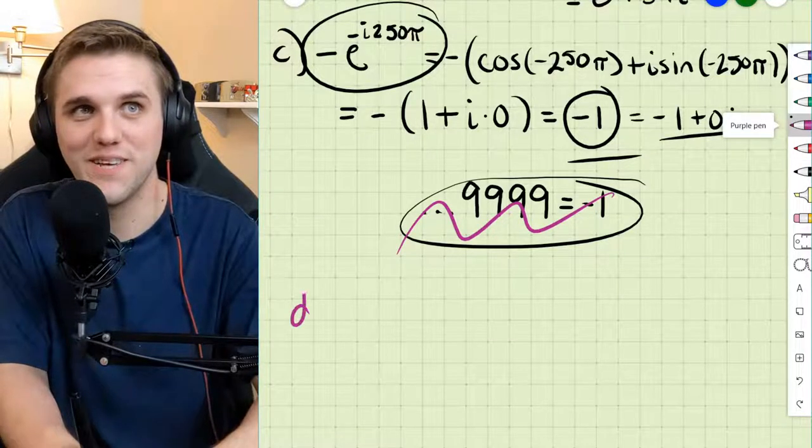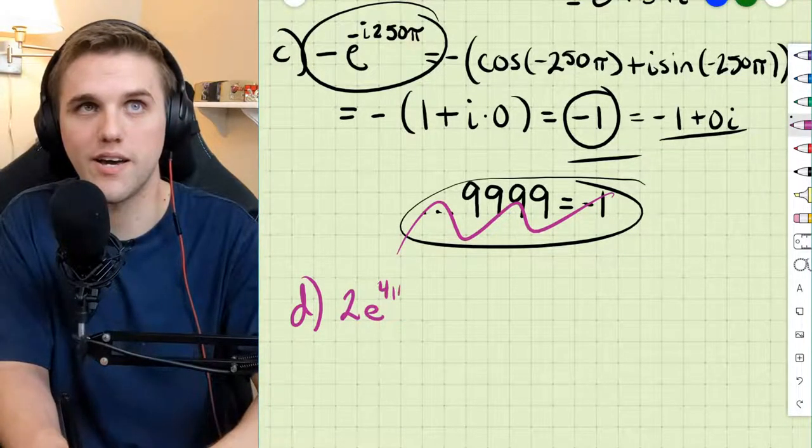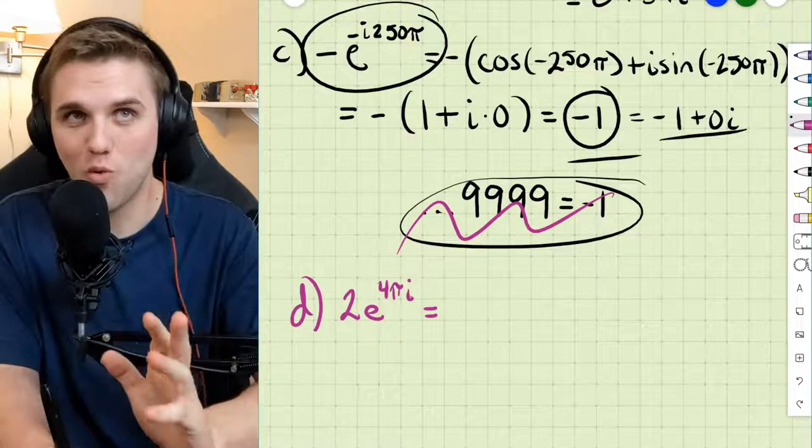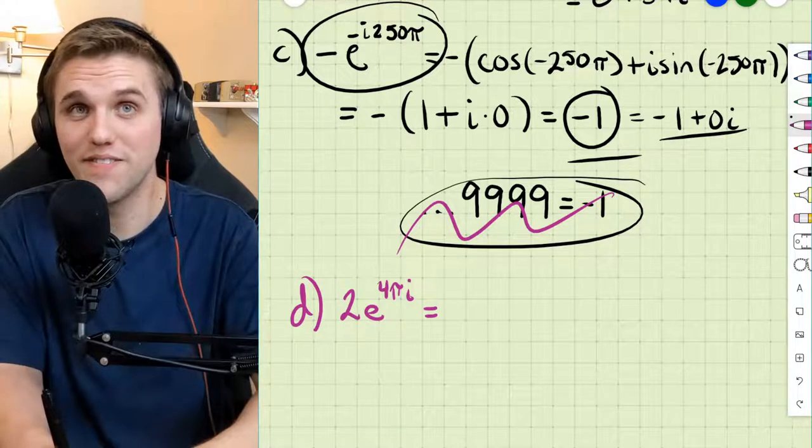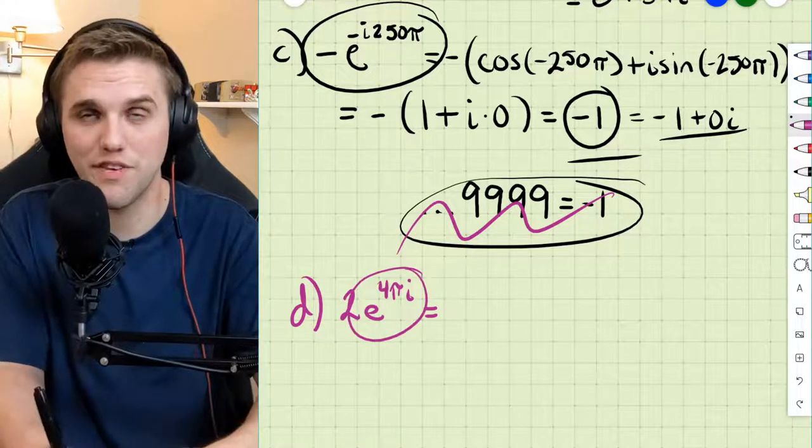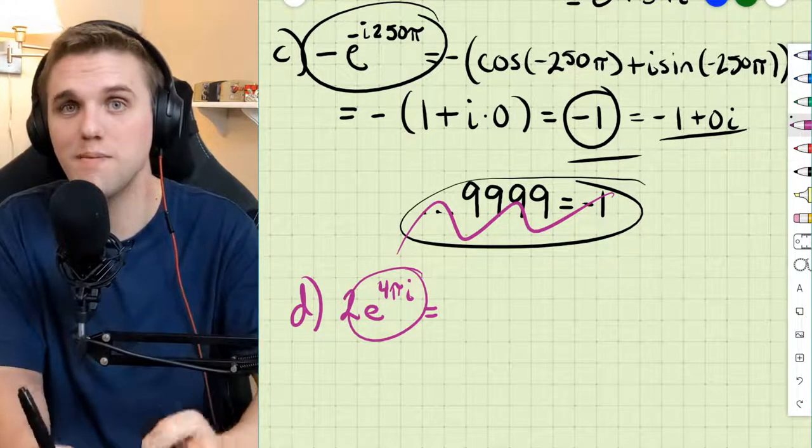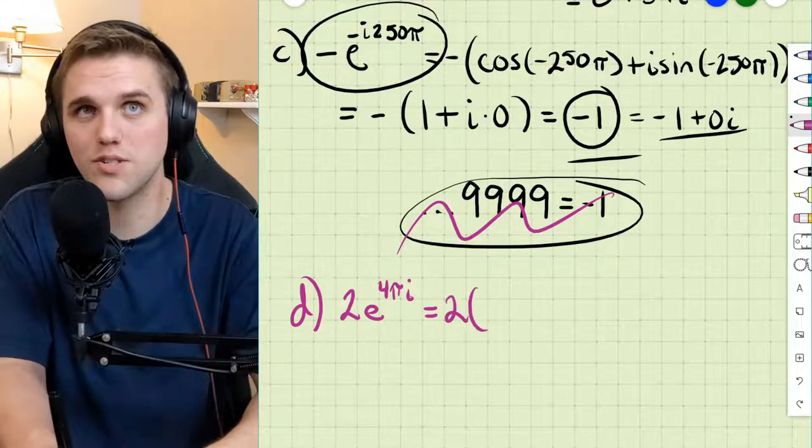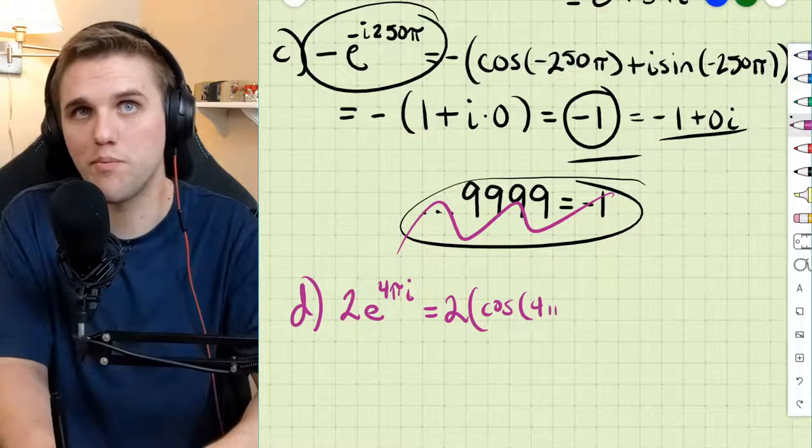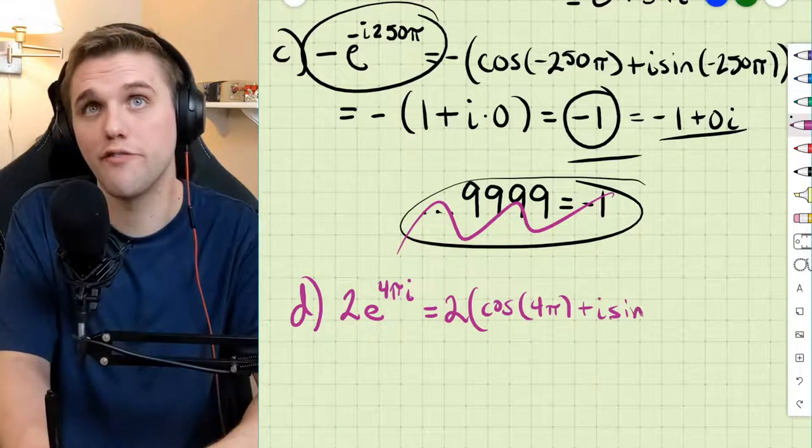All right, let's move on to part D. This is 2e^(4πi). Just like all the other three problems, we're going to just plug 4π into that formula. For the definition of e^(i times φ), which in this case is 4π. So this is 2 times cosine of 4π plus i sine of 4π.